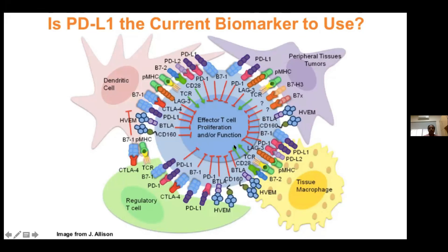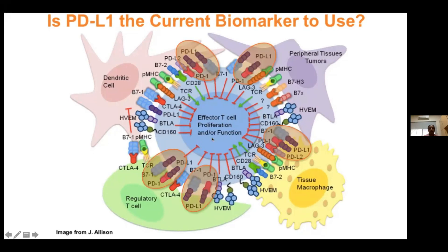Is PDL1 the current best biomarker? As of today, yes — but this cartoon shows there are so many other markers we can look at. Work is ongoing targeting markers involving dendritic cells, peripheral tissue, tumor cells, macrophages, regulatory T-cells, and effector T-cells. There is a complex interplay between all these cells and the tumor cell, and we will see more data targeting many of these biomarkers in the future.